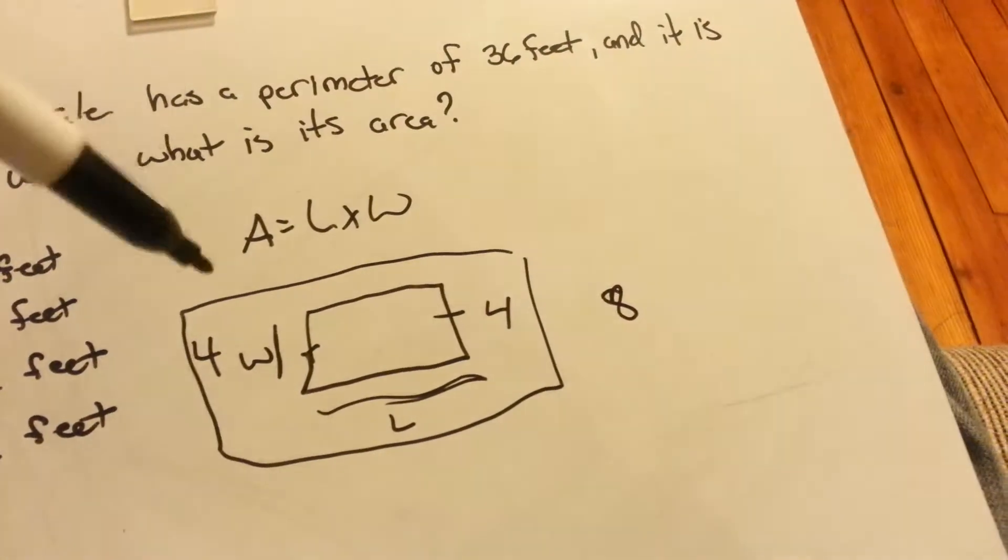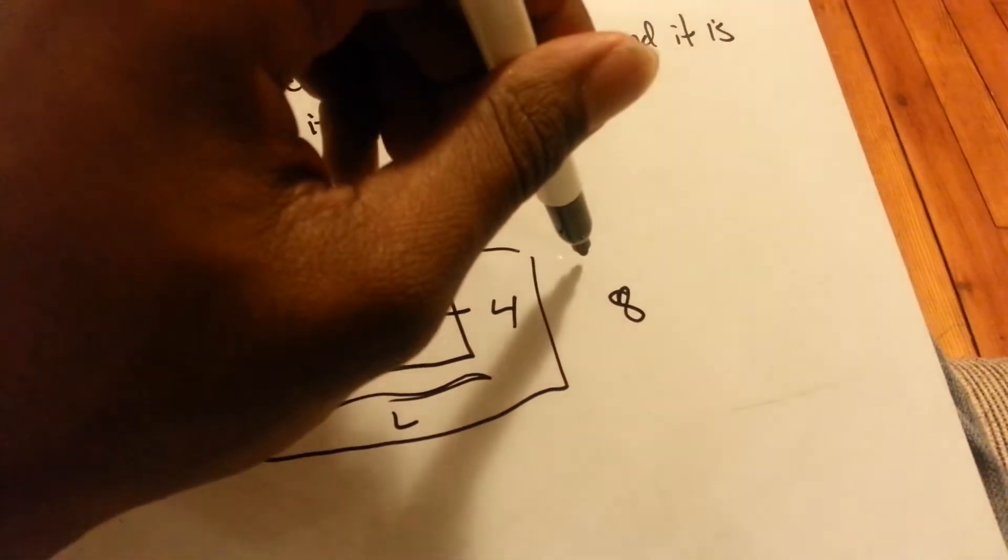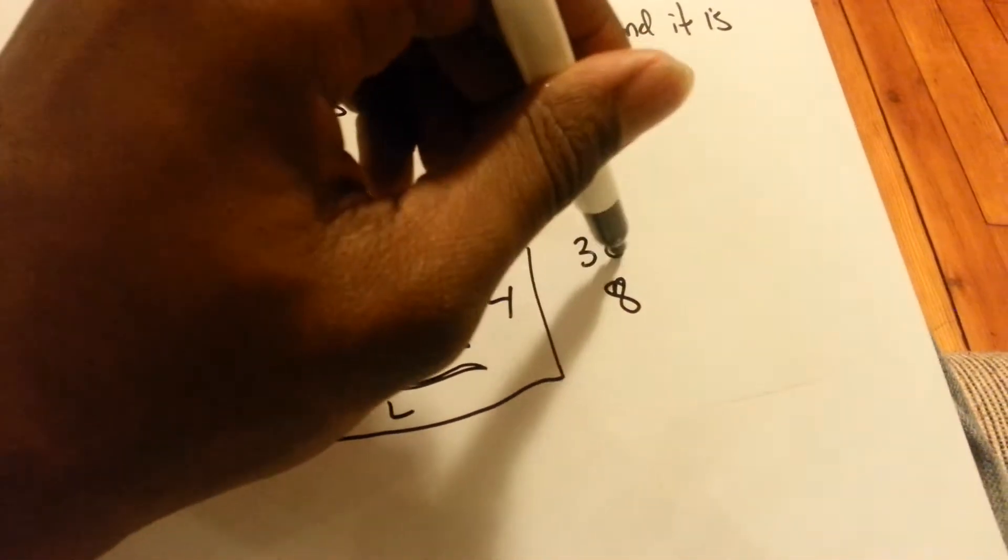We got 8 feet and the total is 36. So we just subtract 36. Take 8 from 36.